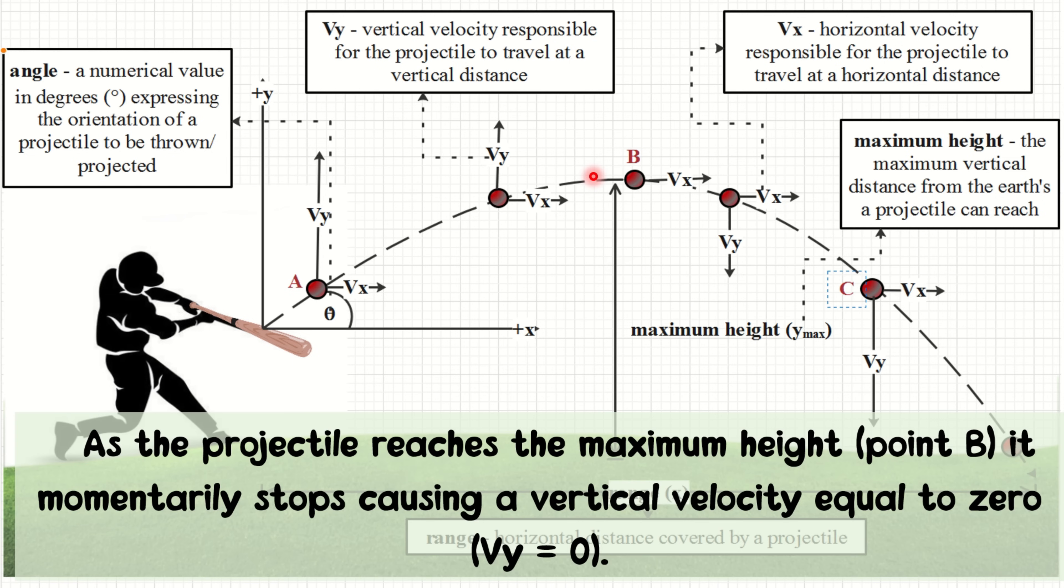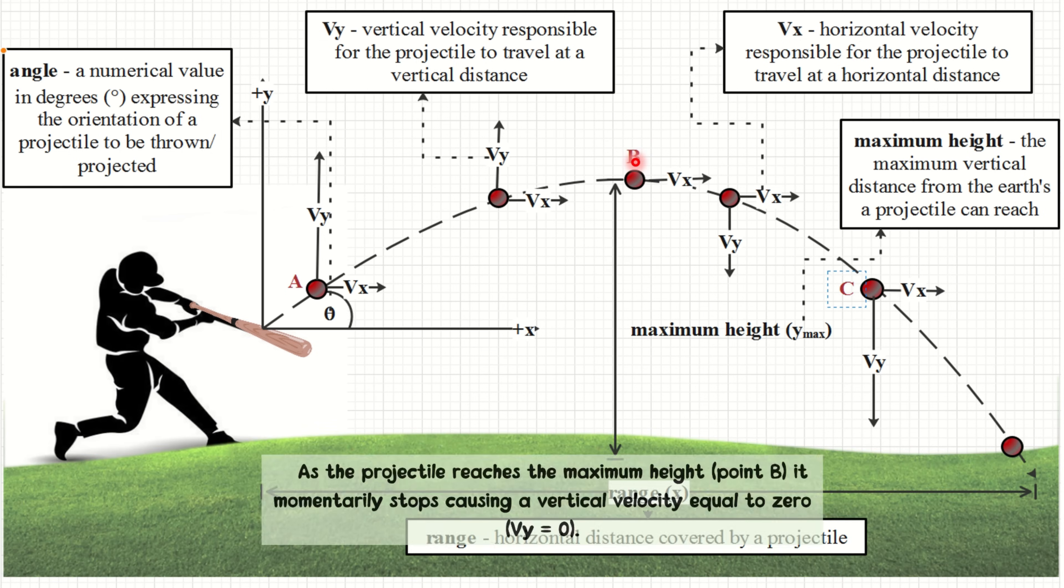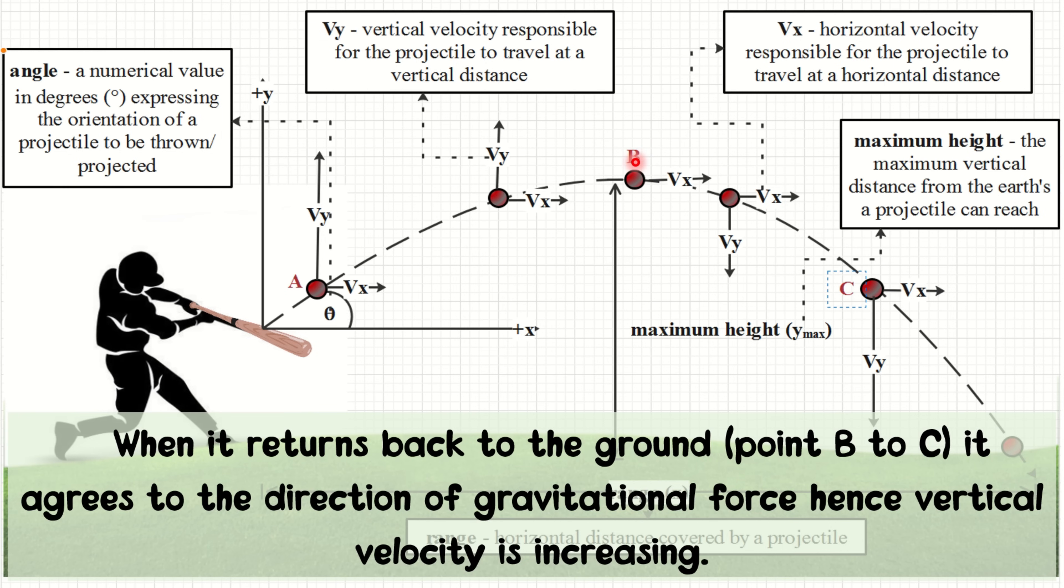Next, as the projectile reaches the maximum height, which is point B, it momentarily stops, causing a vertical velocity or Vy equal to zero. And third, when it returns back to the ground, from point B to point C, it agrees to the direction of gravitational force. Hence, vertical velocity is increasing.